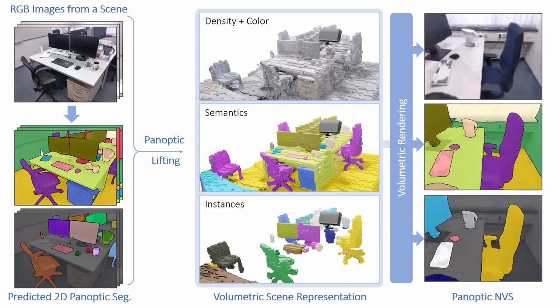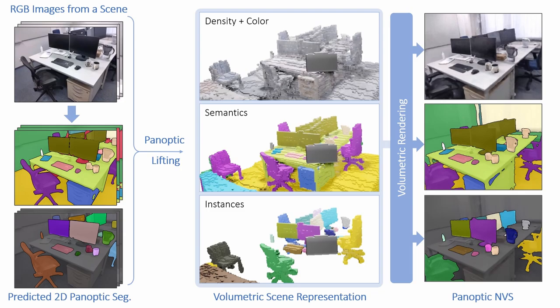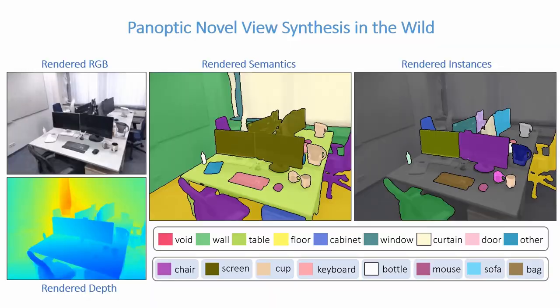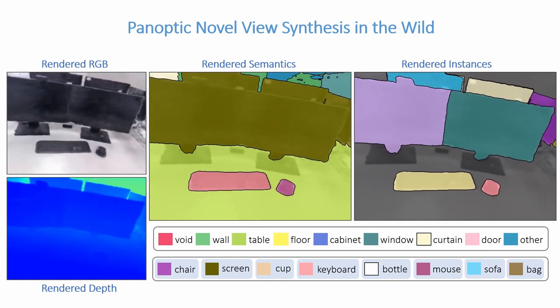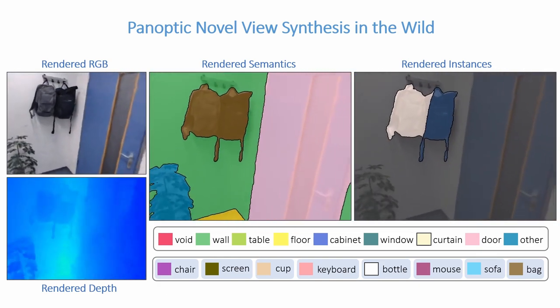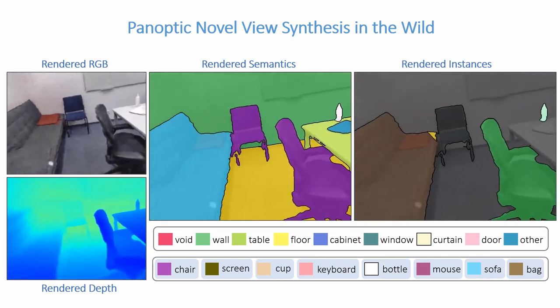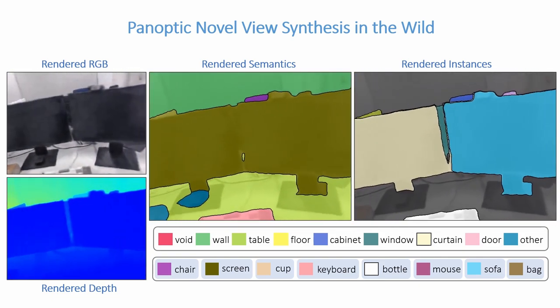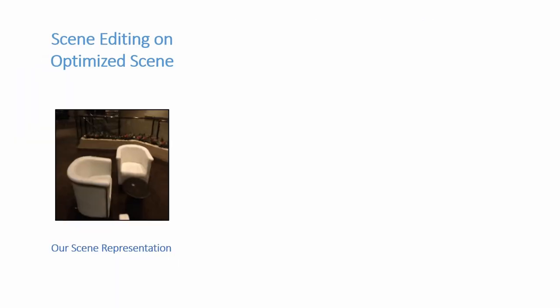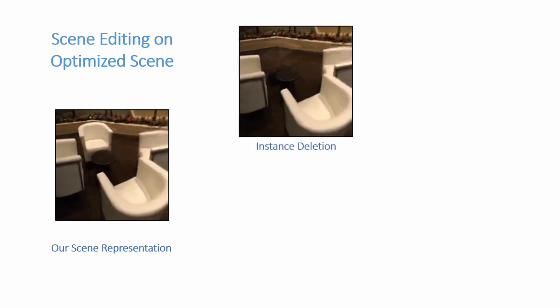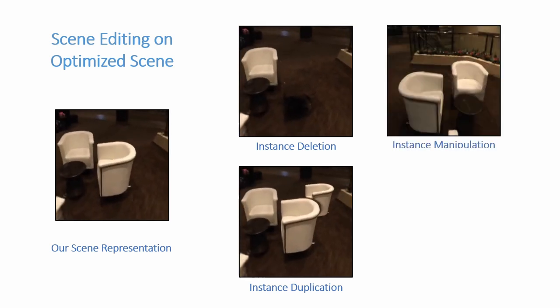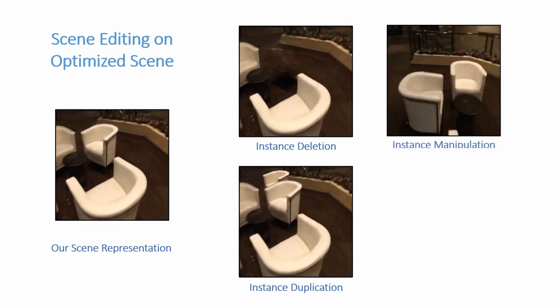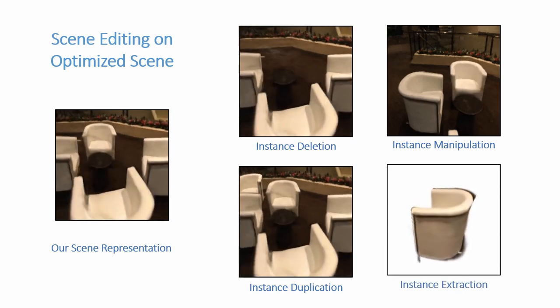Once optimized, our representation can render novel views and their panoptic segmentations. Our model works without requiring any annotations on new scenes captured in the wild, giving clean and view-consistent segmentation. Our scene representation can be further used for scene editing tasks like instance deletion, duplication, manipulation, and instance extraction.